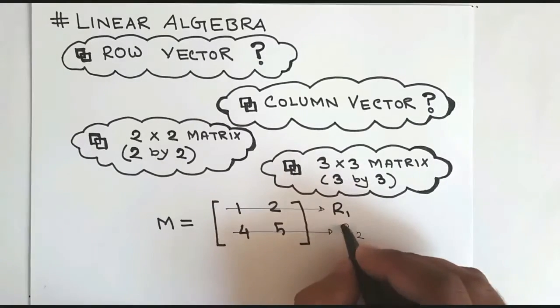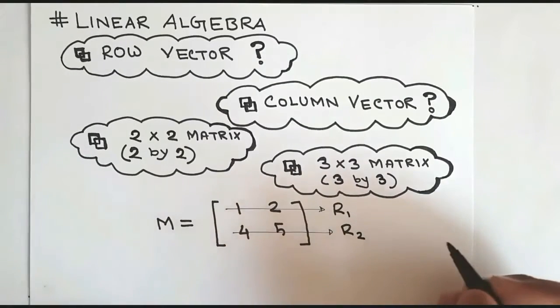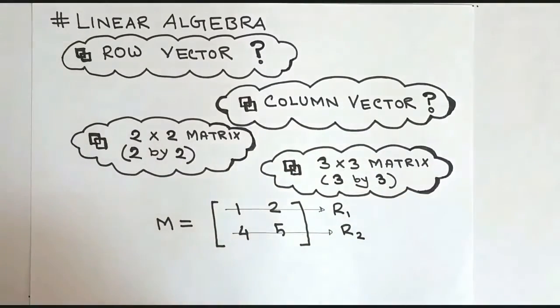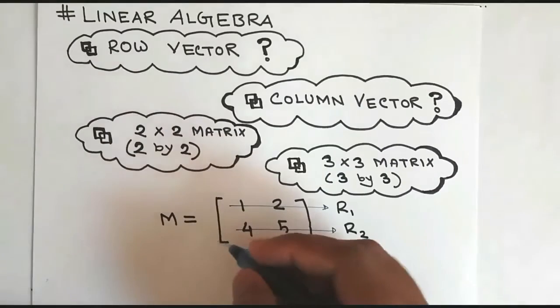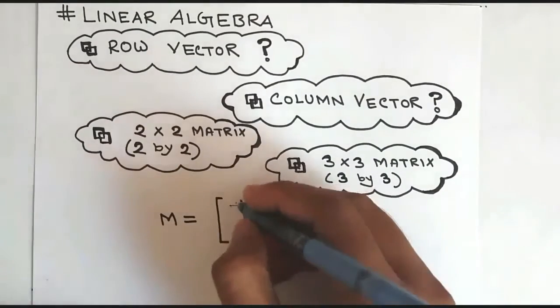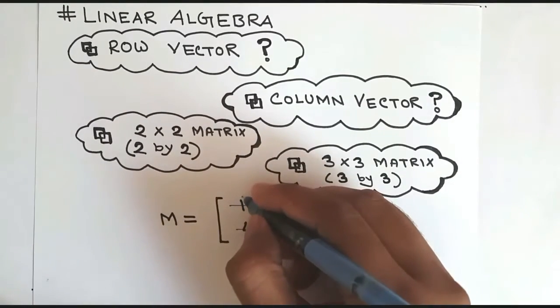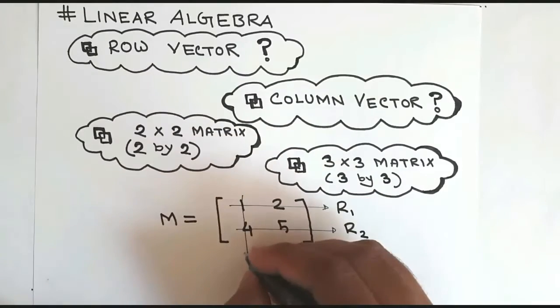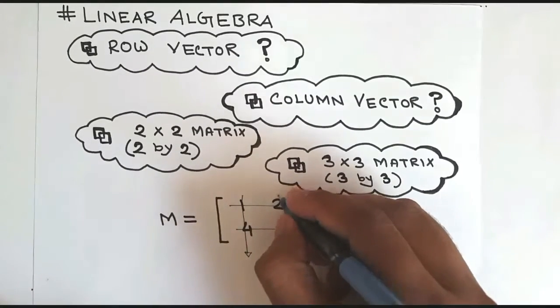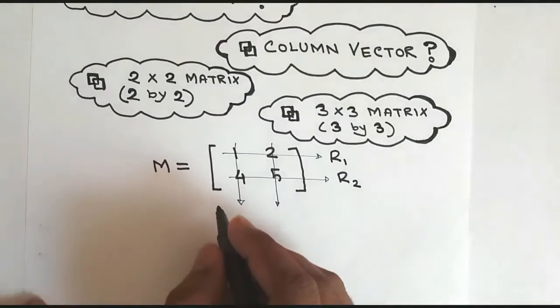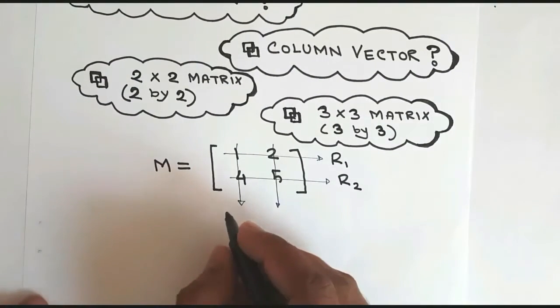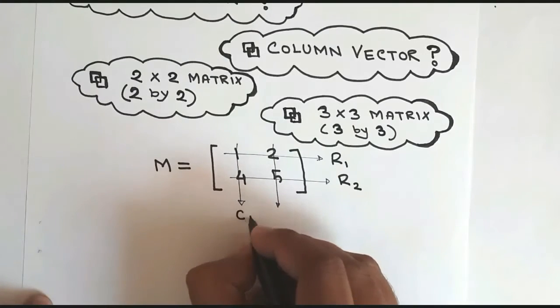Now the second step is the column vector. In here the column vector is the Y axis line or the vertical axis line. In here we also have two vertical lines or Y axis.